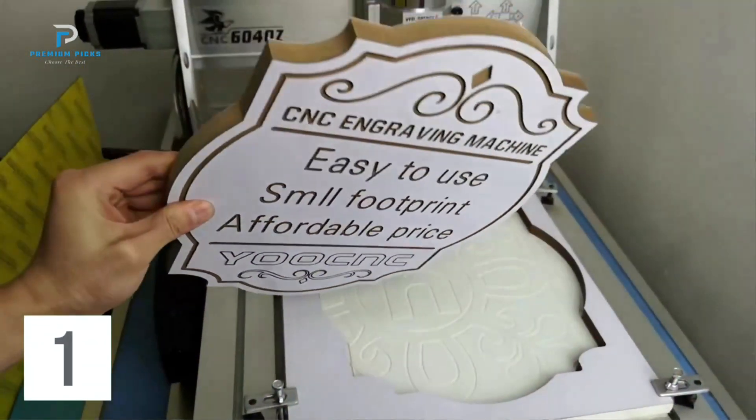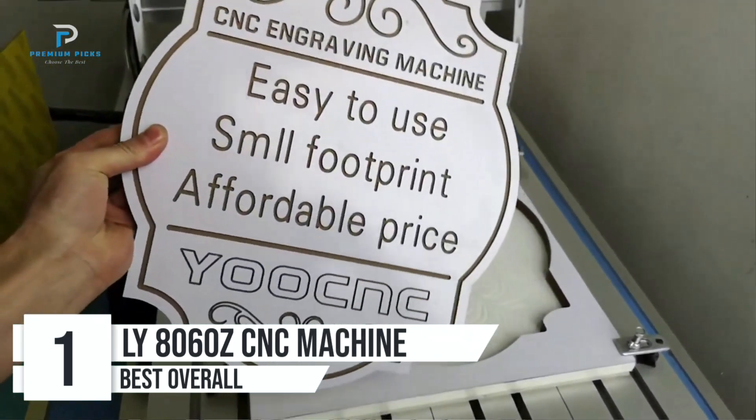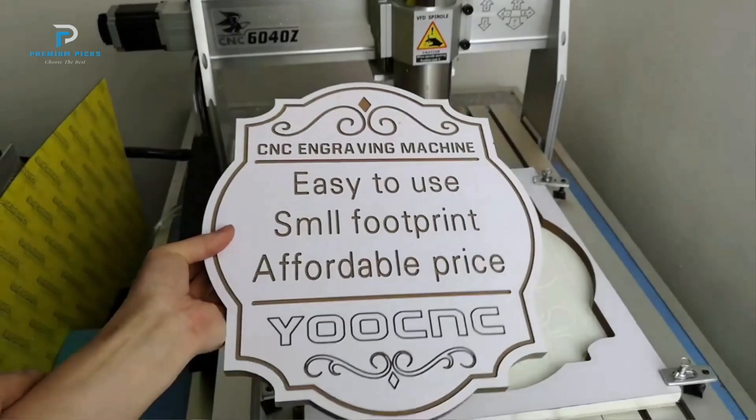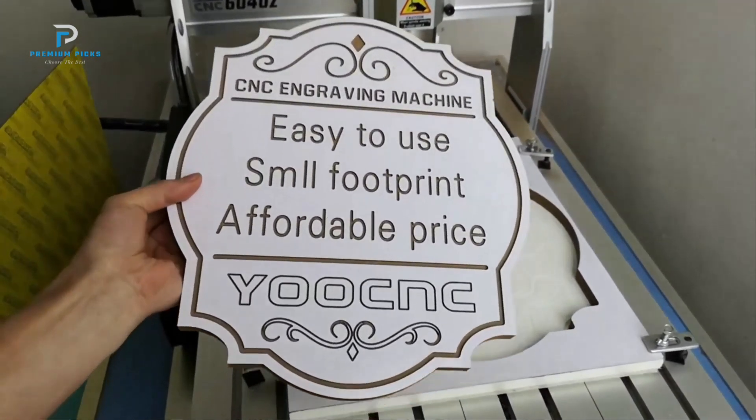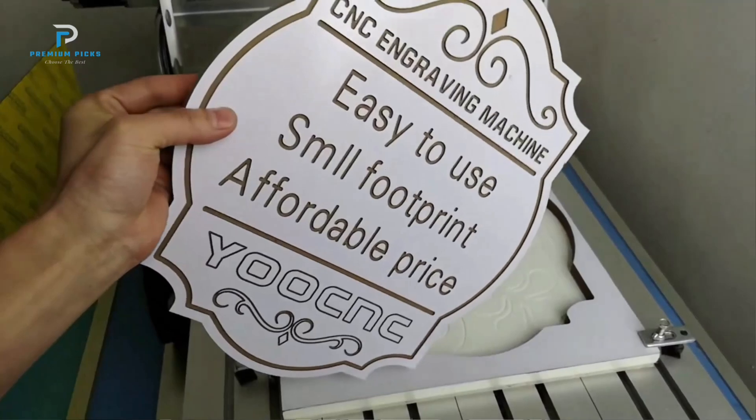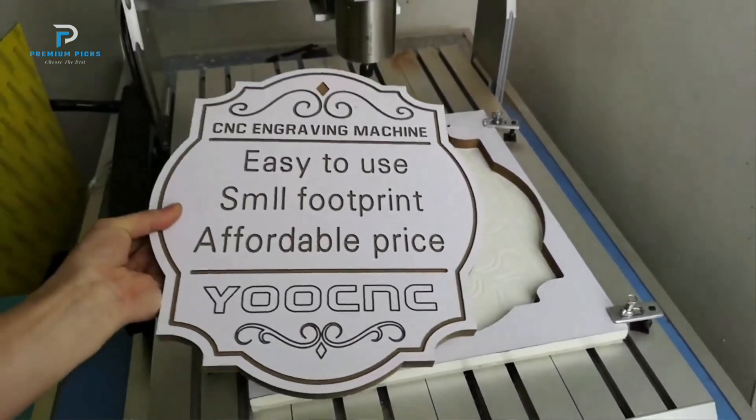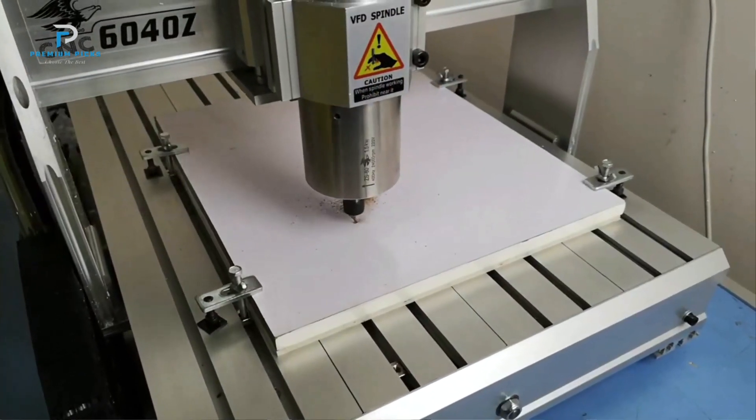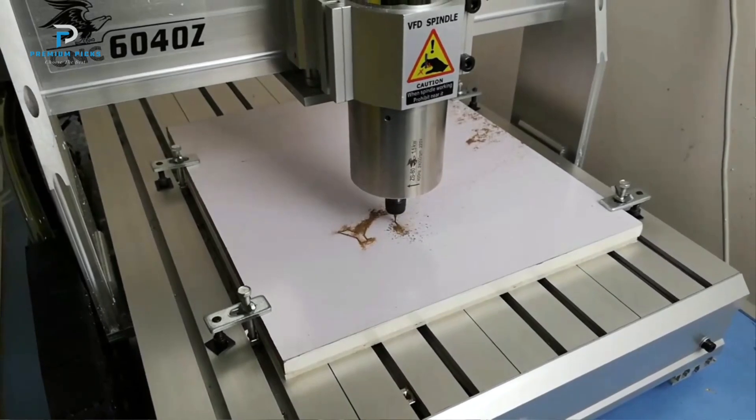Number 1. LY8060Z CNC Machine. The LY8060Z CNC router is a highly versatile and powerful engraving machine, ideal for both wood and metal working. Designed for DIY enthusiasts and professionals, this machine delivers precision, power, and ease of use. Whether you're working on intricate wood engravings or heavy-duty metal projects, the LY8060Z's robust features make it an excellent choice for a wide range of applications.